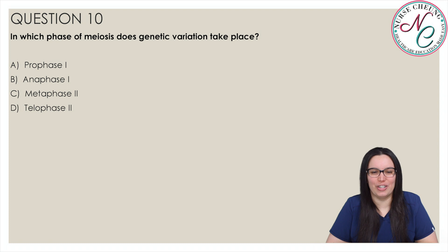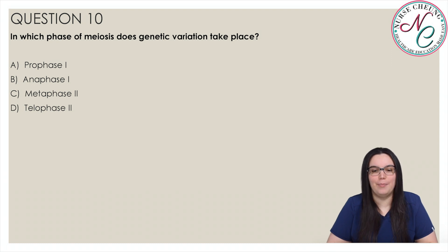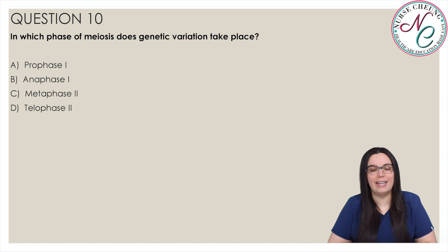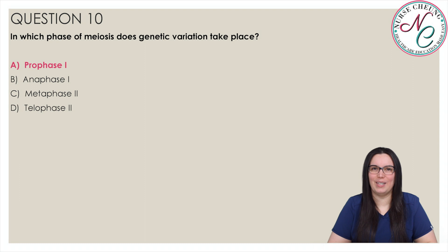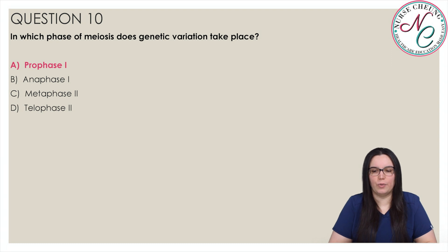Moving on to our final question: in which phase of meiosis does genetic variation take place? Is it A, prophase 1; B, anaphase 1; C, metaphase 2; or D, telophase 2? The correct answer is A, prophase 1. In meiosis, genetic variation happens in the first phase, prophase 1. The two sets of chromosomes recombine through crossing over.